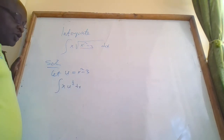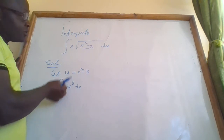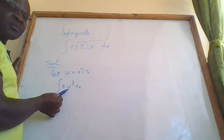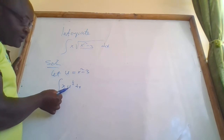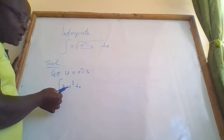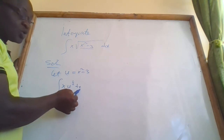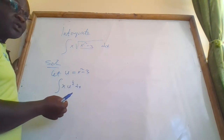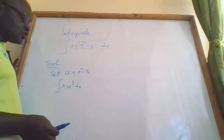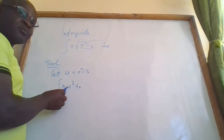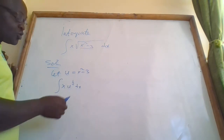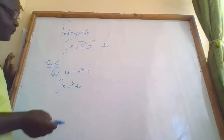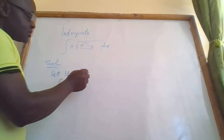Now we have changed the variable — the variable was x and now it's u. So once we change the variable, we must also change dx, because when we are performing the integration we must end with du.